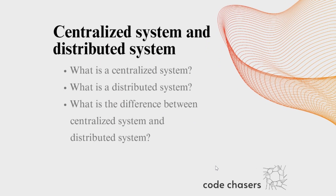The first topic is centralized system and distributed system. The subtopics covered are: what is a centralized system, what is a distributed system, the difference between them, and which system is suited for this present world where digital data is increasing rapidly. This topic has already been discussed in my earlier video — I'll keep the link in the description, please have a look.